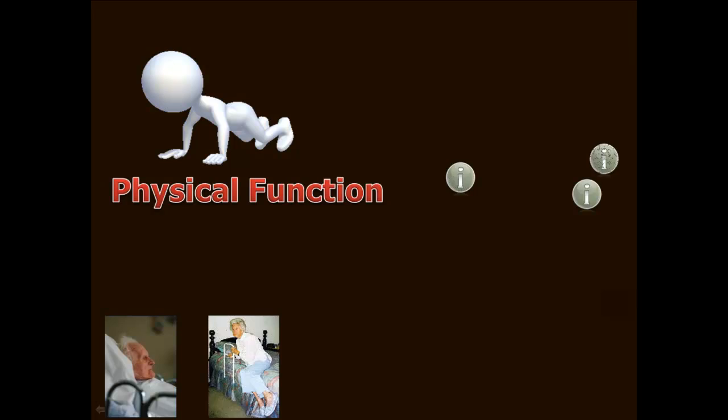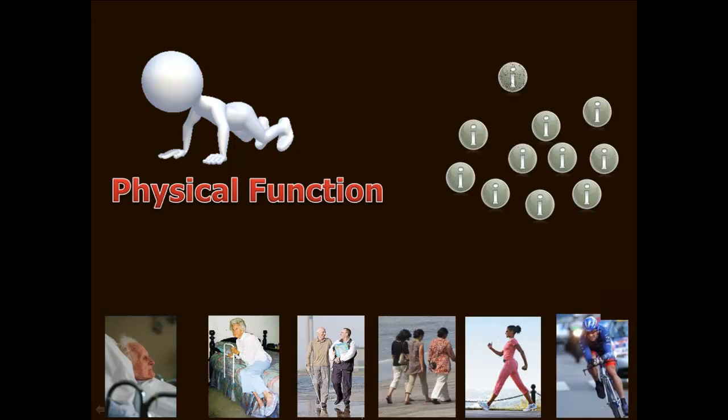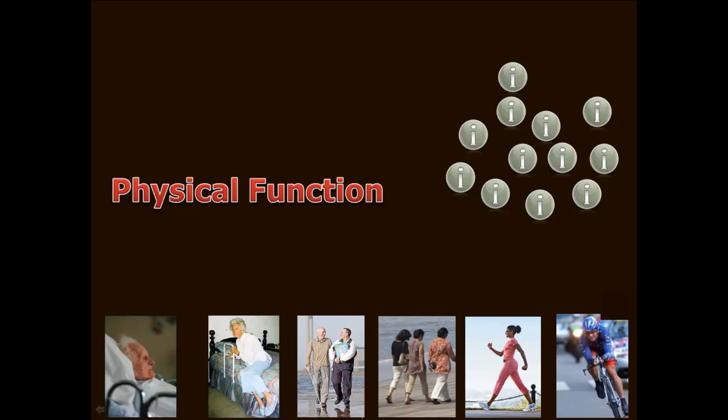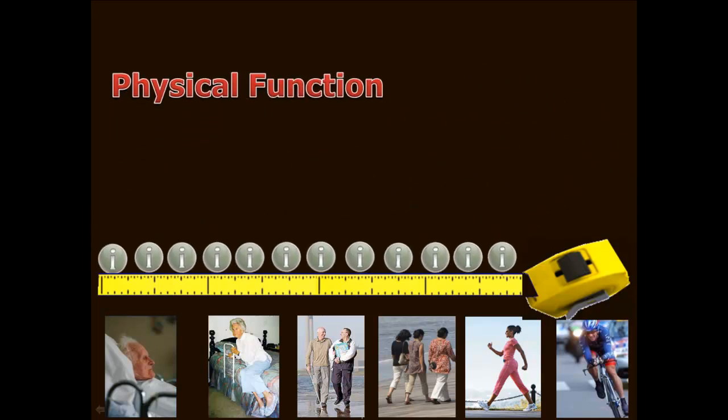Let's use an easy example to explain how a CAT works. Imagine that you want to measure physical function. There's a whole range of physical function from very low physical function to being at a high-level athlete level. And you can picture a lot of different items that you could write that would target physical function. This is your item bank. What an IRT calibration does is order these items along the continuum from very low function to very high function.